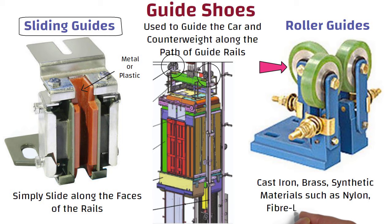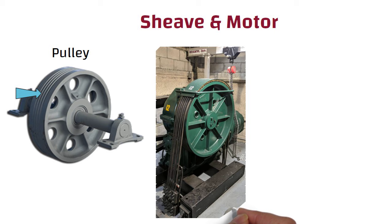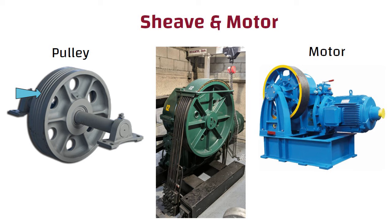Sheave, also known as pulley, has grooves in it and lets the rope be lifted, raised, and lowered. It is the motor that keeps the sheave moving in the correct direction, taking people where they need to go.